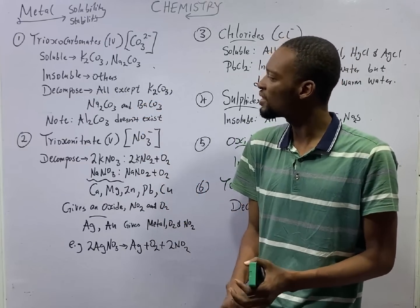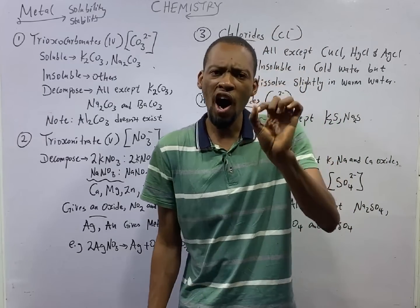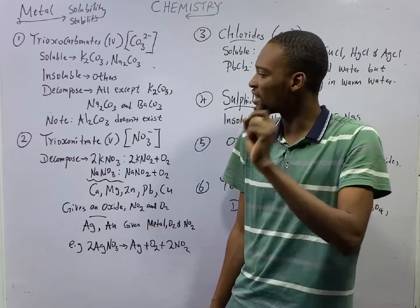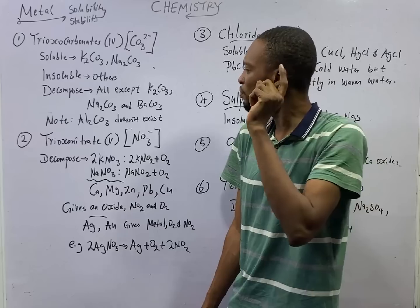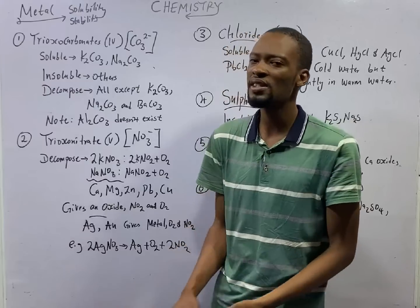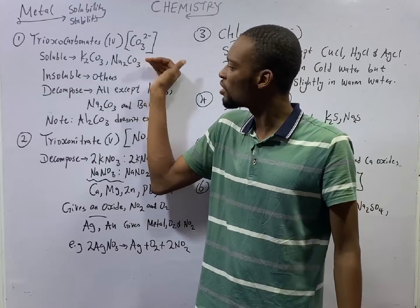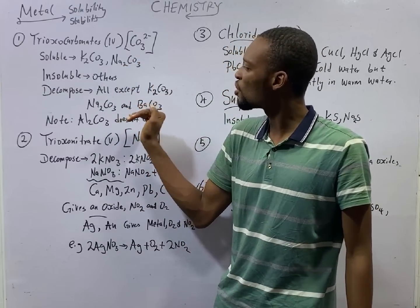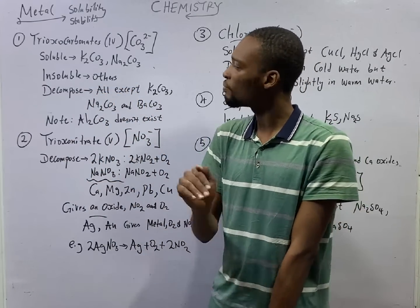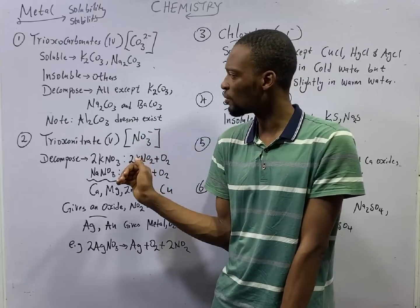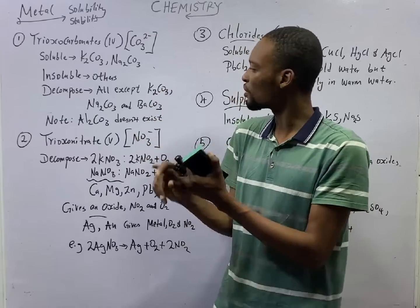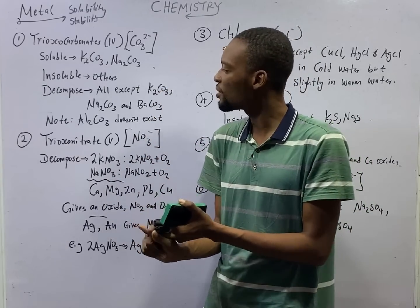How about stability to heat? All trioxocarbonates of metals decompose when heated, except potassium trioxocarbonate, sodium trioxocarbonate, and barium trioxocarbonate. So the trioxocarbonates that are soluble also do not decompose when heated. To summarize: all trioxocarbonates are insoluble except potassium and sodium trioxocarbonate. All trioxocarbonates decompose when heated except potassium trioxocarbonate, sodium trioxocarbonate, and barium trioxocarbonate.